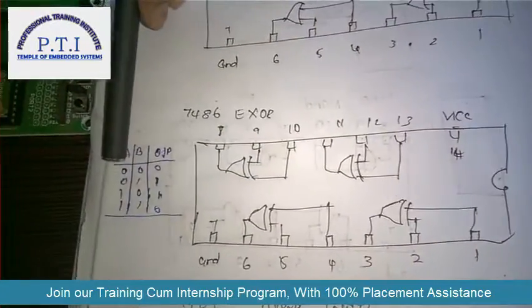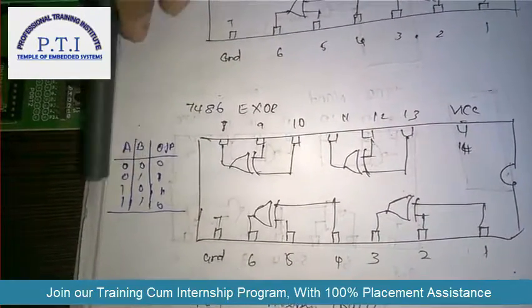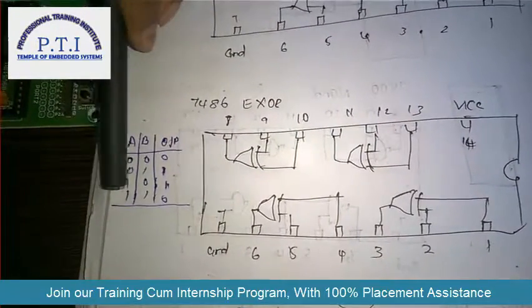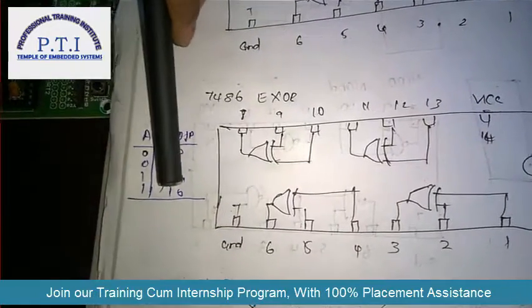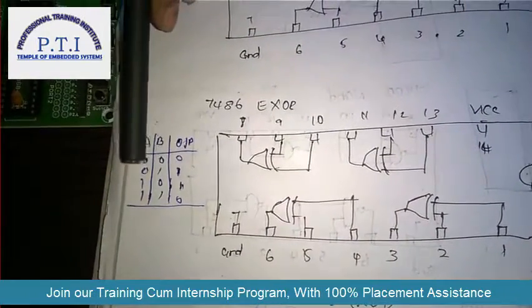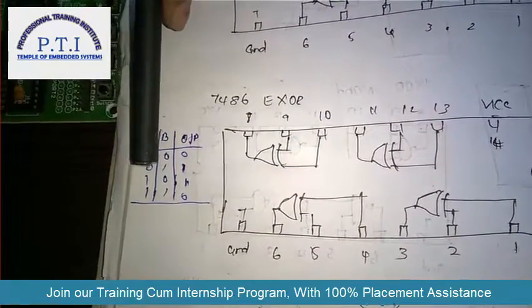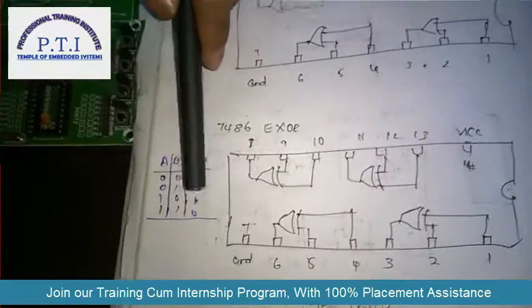In the truth table, if the input is 0 and 0 then the output is 0, and if the input is 1 and 1 the output is also 0. If the input is 0 and 1, or 1 and 0, the output is 1.